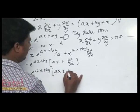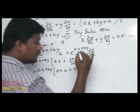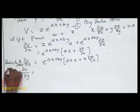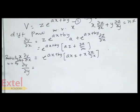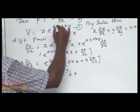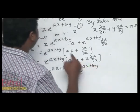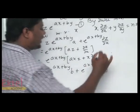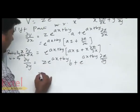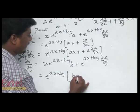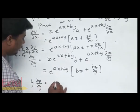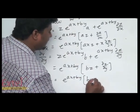Now differentiating v = z·e^(ax+by) partially with respect to y: the derivative of by with respect to y is b, and differentiating z gives ∂z/∂y. So ∂v/∂y = e^(ax+by)·(b·z + ∂z/∂y). Multiplying by y on both sides gives y·∂v/∂y = e^(ax+by)·(b·y·z + y·∂z/∂y).